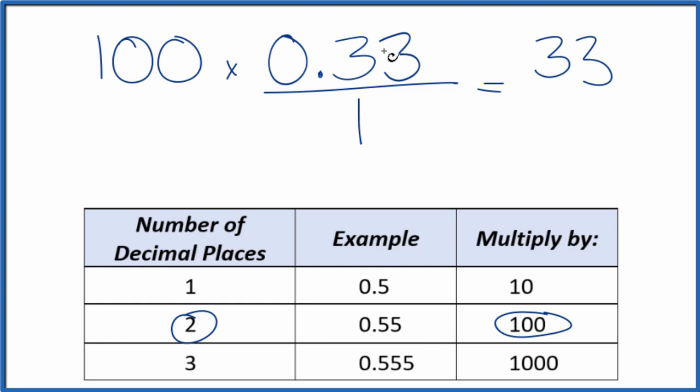But we can't just multiply the numerator by 100. We also need to multiply the denominator by 100. 100 divided by 100, that's just 1. So again, we haven't changed the value, just the way it's represented here. 100 times 1, that equals 100.